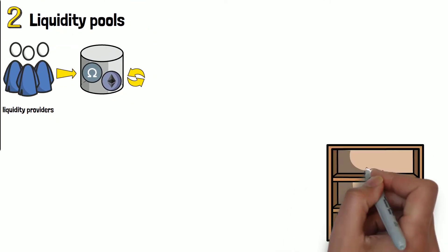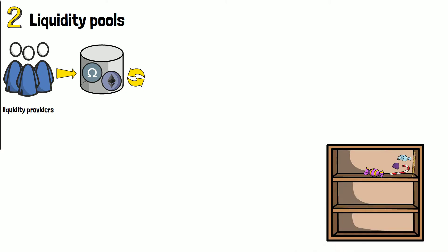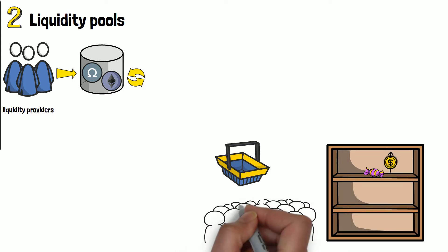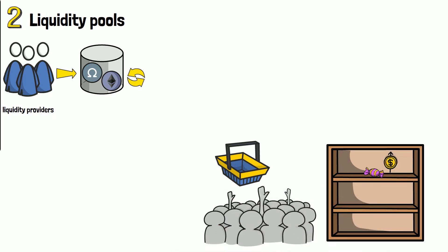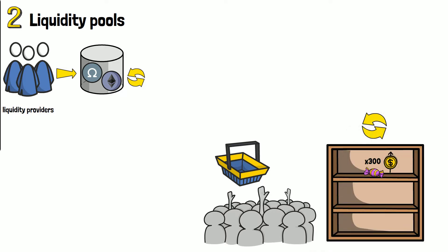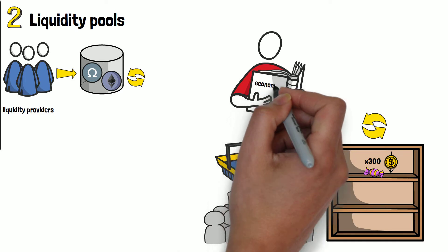A liquidity pool is a place that stores all of the cryptocurrency tokens that are available to be traded, and are provided by liquidity providers — the DeFi community. It's like a shelf of candy in a shop. If there are 5 candies on the shelf, you can purchase up to 5 candies until the shop runs out of stock. If there's only one candy on the shelf, it's probably going to be much more expensive, since while the demand remains the same, the supply is limited. If there are hundreds of candies available and the demand doesn't increase, the candies will cost less. Up to this point, everything is just basic economics.